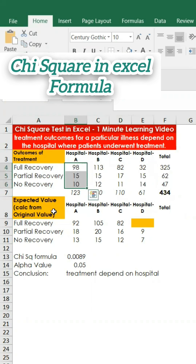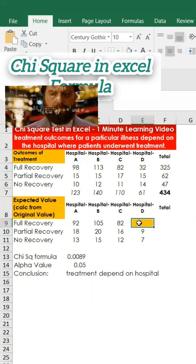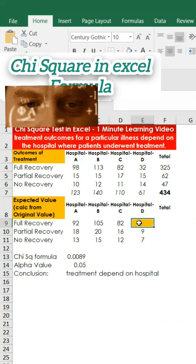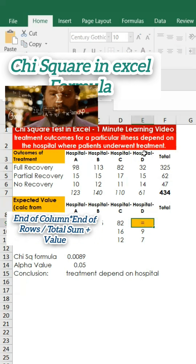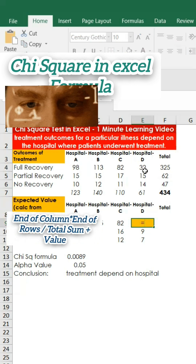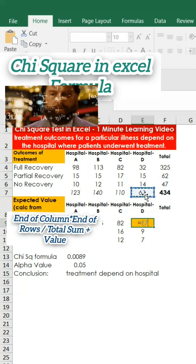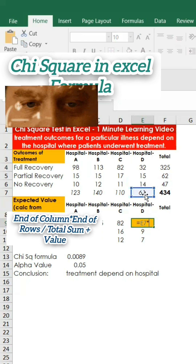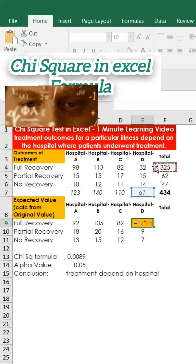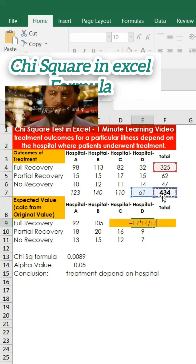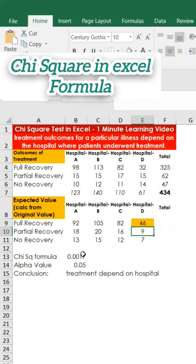Very importantly, for chi-square we need to find the expected value. To keep the video to one minute, all you have to do is: for example, take the total of the column times the total of the row, divided by the grand total value.